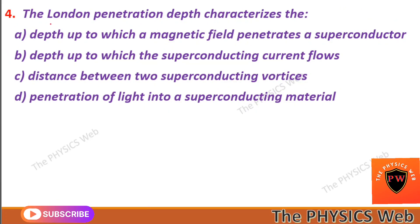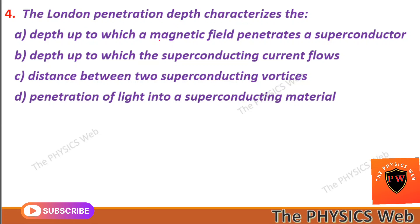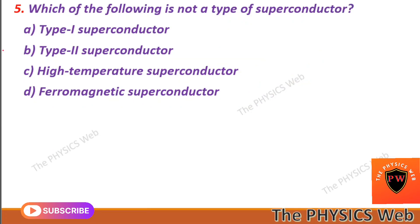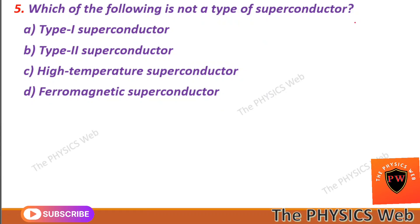Next, question four: the London penetration depth characterizes the depth up to which a magnetic field penetrates a superconductor. So A is your correct option. Question five: which of the following is not a type of superconductor? Ferromagnetic superconductor — so D is your correct option.